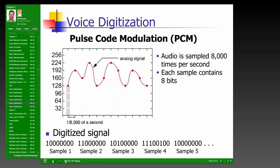PCM — Pulse Code Modulation — is the method actually used by the telecommunications system. We sample the analog signal 8,000 times per second. The first sample at one-eight-thousandth of a second is converted to a string of bits — for example, 10000000 in binary represents decimal 128. The second sample at 192 is represented as 11000000, since 128 + 64 = 192. The third sample at 160 is 10100000, since 128 + 32 = 160.